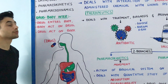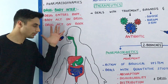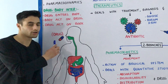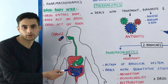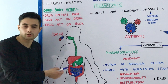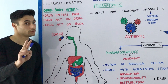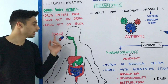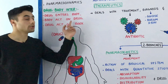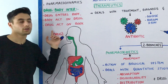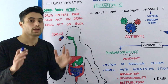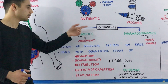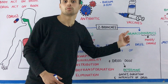Now, what is the drug and body interaction? Have a look at this diagram. Imagine a person is taking a drug. This drug will have an effect on the body, and the body will also have some kind of action on the drug. So we can divide pharmacology into two major branches based on the action of the drug: pharmacokinetics and pharmacodynamics.